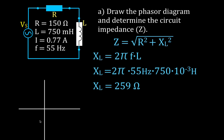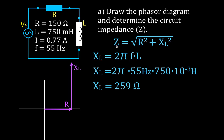Now we can calculate the impedance. First we draw the impedance phasor diagram. We draw the vector representing the resistance along the positive x-axis, and the vector representing the inductive reactance along the positive y-axis. I tried to draw these to scale — resistance is 150 ohms long and inductive reactance is 259 ohms long. We add those two values using the head-to-tail method, and the sum is represented by the yellow vector, which is the impedance.